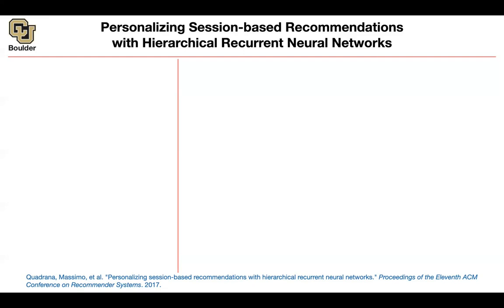They came back five days later and interacted again. In the meantime, you know they're using the same IP address, or perhaps they logged into your system, so you have a longer history about that user. This is where hierarchical RNN is going to come in. Let's focus on a single session for now, but then we'll generalize to multiple sessions. A session — let's call it session m — is going to be a list of items, a list of integers.